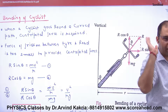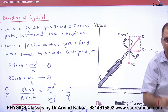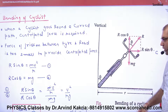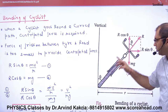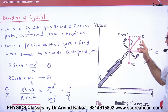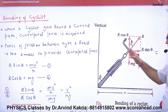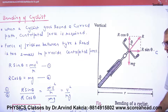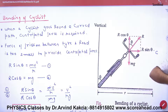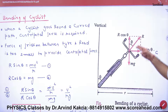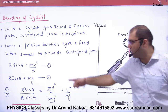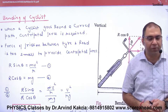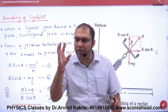Now, looking at the force diagram: the normal reaction R is along the vertical line. We resolve it into two components — R cos θ and R sin θ. Since the cycle is not moving up or down, R cos θ equals mg. That is the first equation.